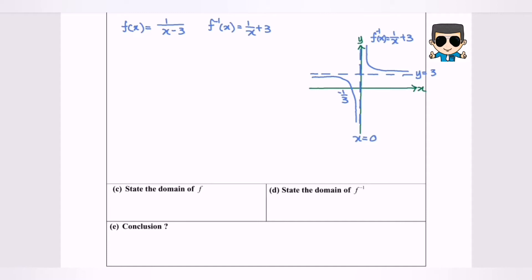The domain for f — we have to refer to the denominator since this is a reciprocal function, so the denominator cannot equal 0. That means x minus 3 cannot equal 0, so x cannot equal 3. Therefore the domain for f is negative infinity until 3, where 3 is not included, union 3 until positive infinity.